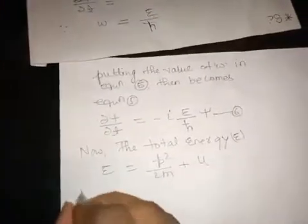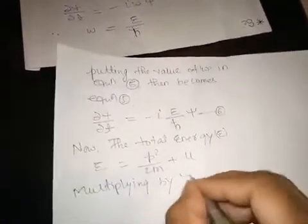Now the total energy equals kinetic energy plus potential energy: p²/2m plus U. Multiplying by ψ on both sides, Eψ equals p²ψ/2m plus Uψ.